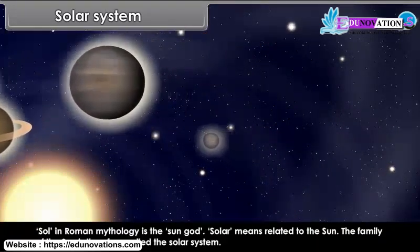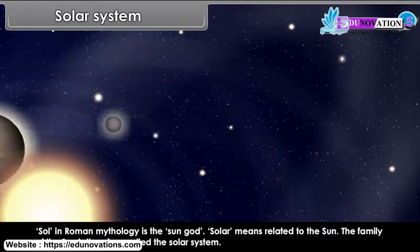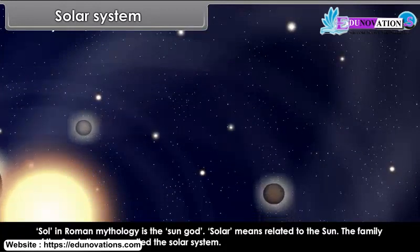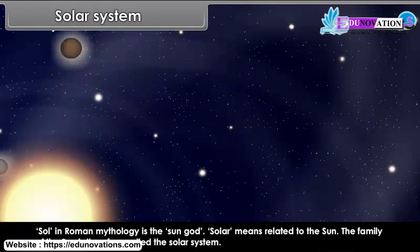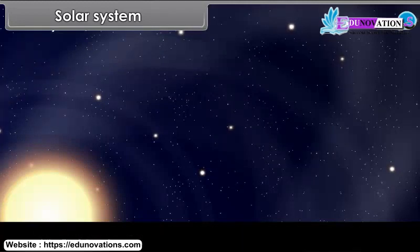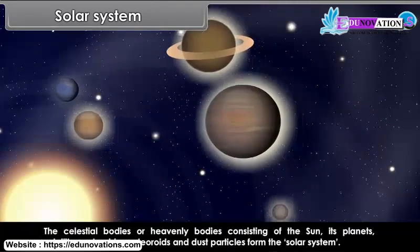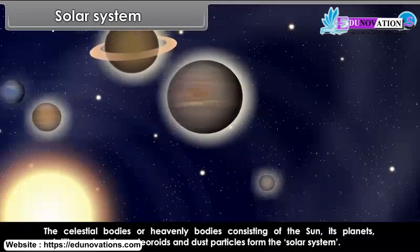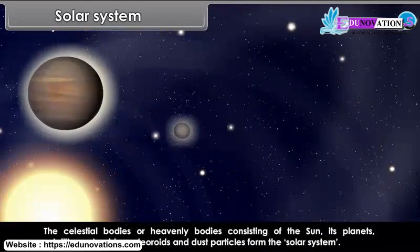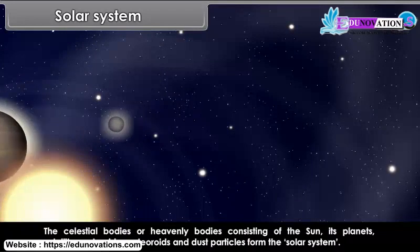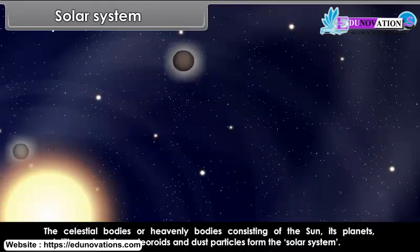Sol in Roman mythology is the sun god. Solar means related to the Sun. The family of the Sun is therefore called the solar system. The celestial bodies or heavenly bodies consisting of the Sun, its planets, satellites, asteroids, meteoroids and dust particles form the solar system.